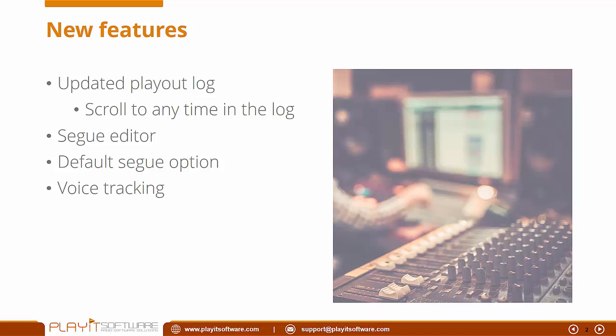In this new version we've got an updated playout log so on the main interface you'll be able to scroll to any time in the log. Previously you could only see the last three tracks, but now you can scroll back to see what you've played even three hours ago, scroll forward in time to see what you're going to play in the future, and you can also plan tracks and drag and drop three days ahead if you wish.